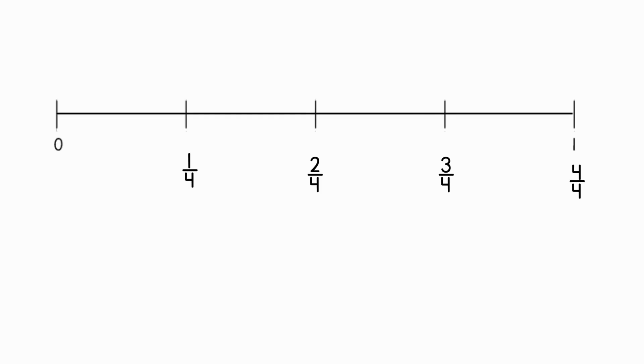Let's look at this number line. There are four equal parts between zero and one. That means the number line is split into fourths. Now here's the task. Graph the fraction one half on this number line. One half has a denominator of two, but the number line shows fourths. What do we do?